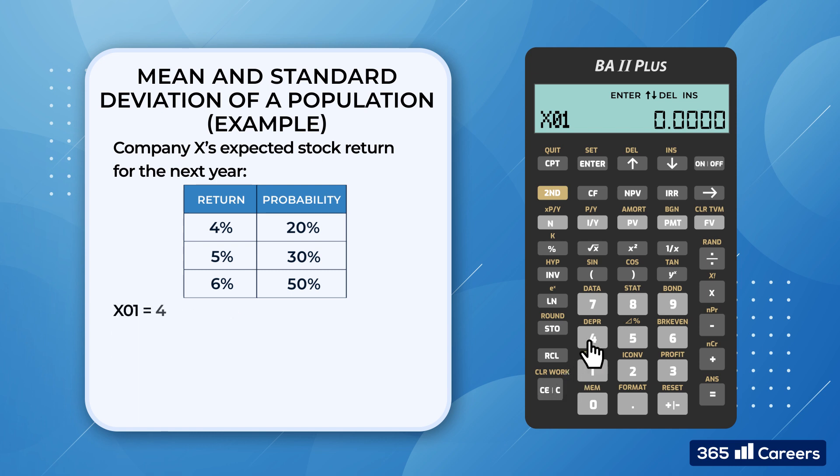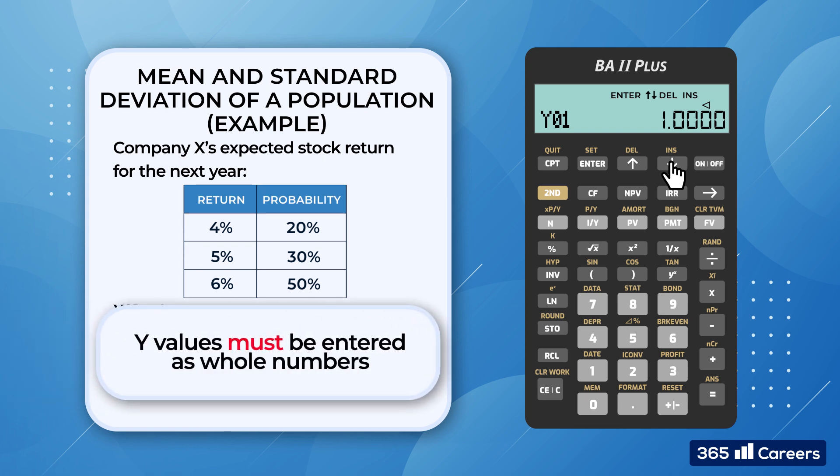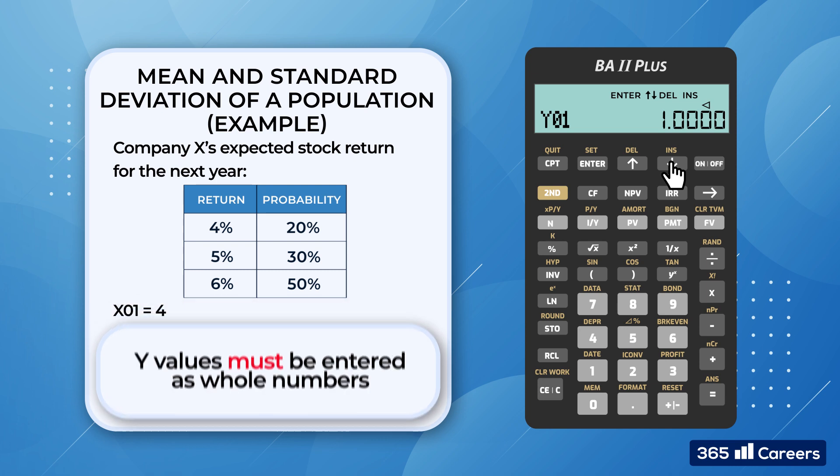x01 equals 4. Then we scroll down to y01. This is the frequency or probability of x01. When we are using this functionality, the calculator doesn't accept anything except whole numbers. So, for example, typing 0.2 will result in an error.